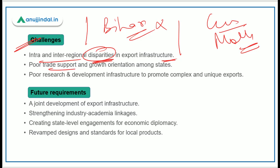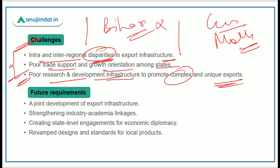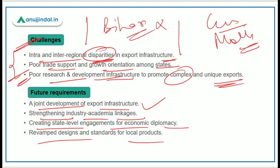There is very poor trade support and growth orientation among states. Another important challenge in front of export promotion is the research and development infrastructure needed to promote complex and unique exports. We need to strengthen industry-academia linkages in export promotion, create state-level engagements for economic diplomacy, and revamp design and standards for local products.